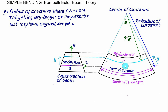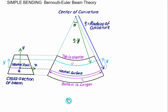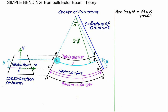Using the arc length concept — arc length equals radius multiplied by angle theta in radians — we can calculate fiber lengths. We label fibers: AB is the fiber at distance Y from the neutral axis, CD is the neutral surface itself, EF is the top fiber, and HI is the bottom fiber. All lengths AB, CD, EF, HI can be calculated using arc length equals R times theta.